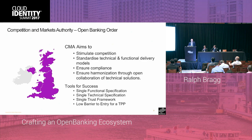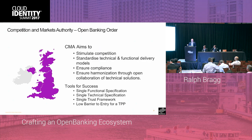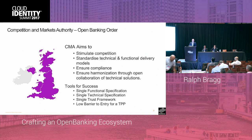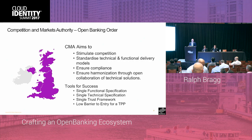So the CMA got the top nine banks in the UK, stuck them in a room and said: you're all going to get together and you're going to build a common trust framework, a common set of security standards, and a common functional set of APIs. And you're all going to do it in the same timeframes and you're all going to go live on the 10th of January altogether. No pressure.